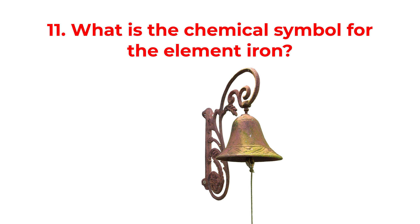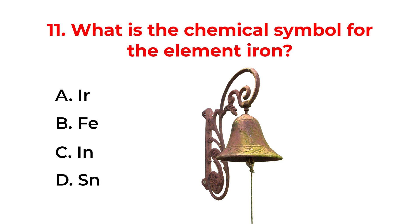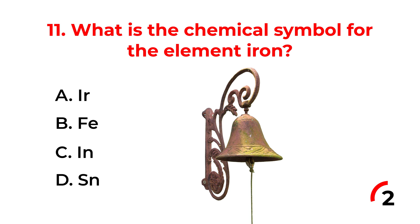What is the chemical symbol for the element iron? A. IR. B. Fe. C. IN. D. SN. The correct answer is option B: Fe.